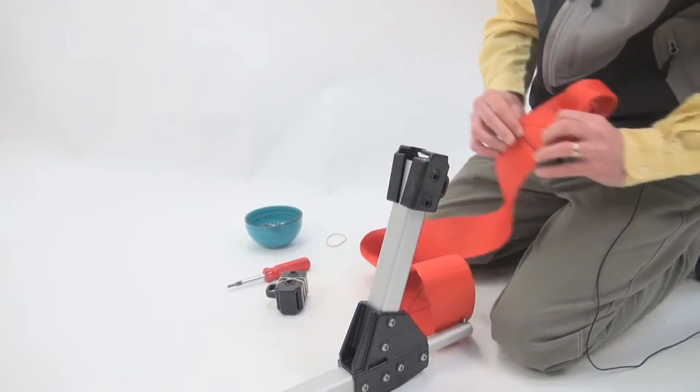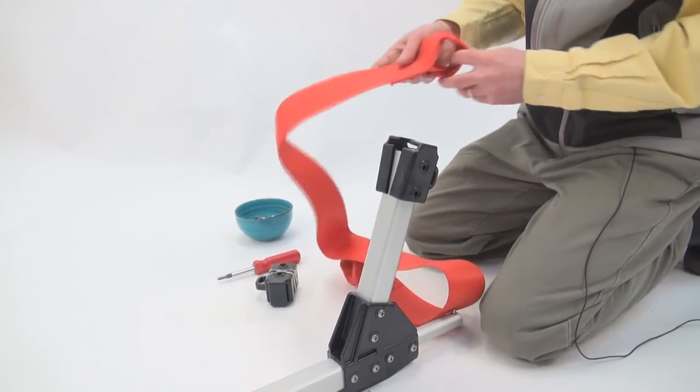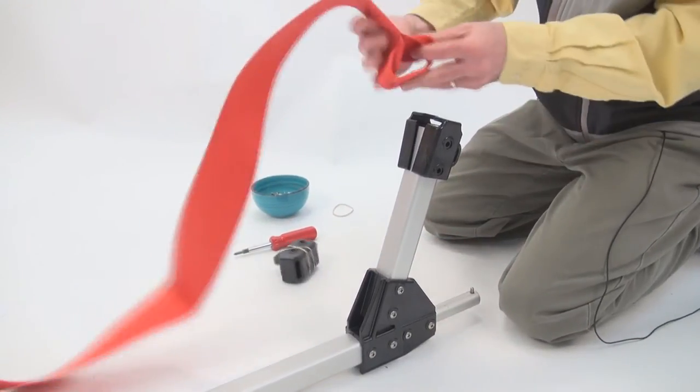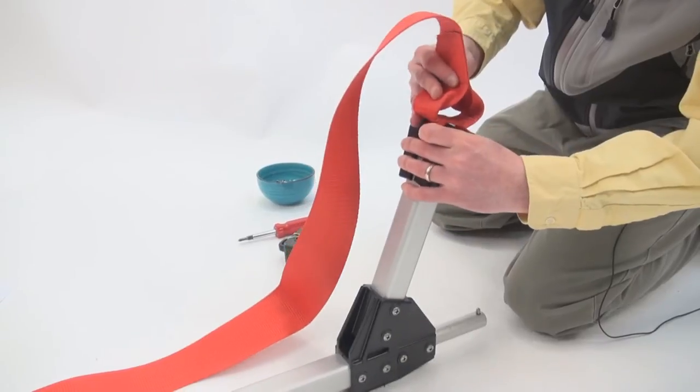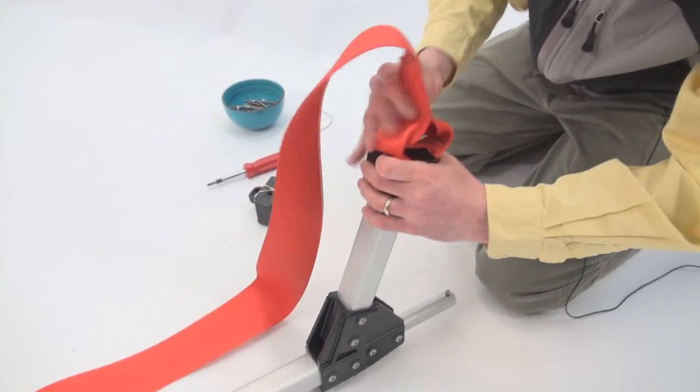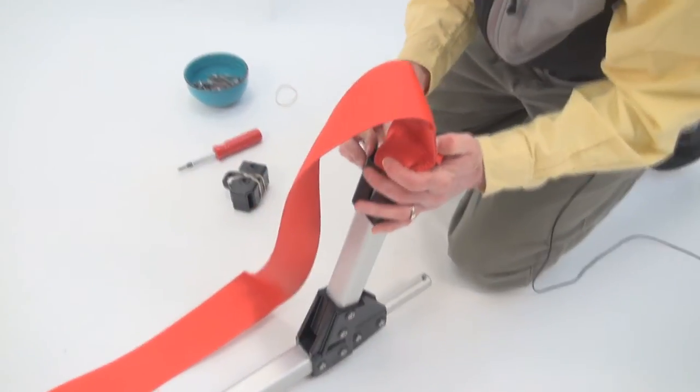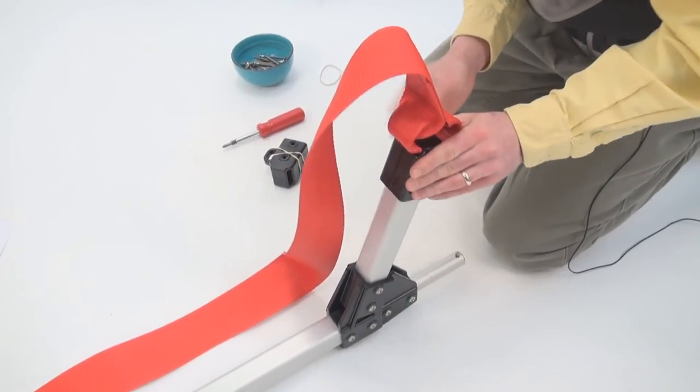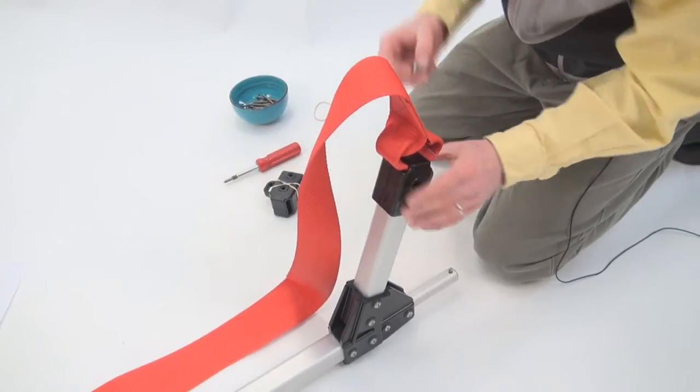And you just want to make sure that the rough side, the stitching is down. Just kind of flatten that out. And we're going to put it in between these two halves. Just kind of like that. And then the same thing is going to go for the screws.